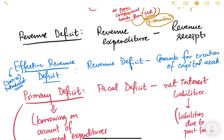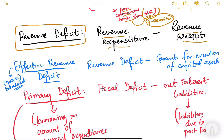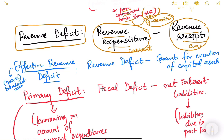Now let us look at the next concept: revenue deficit. Revenue deficit is simply revenue expenditure minus revenue receipts. In fiscal deficit we considered total expenditure minus total receipts except borrowings; here we consider only revenue expenditure minus revenue receipts. We are trying to see how much of the current expenditure is getting financed through current receipts. Revenue means current — not creating any liability or affecting any assets.